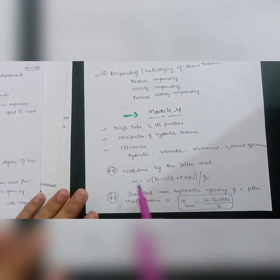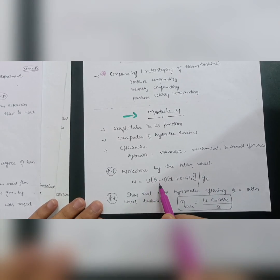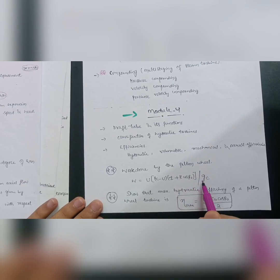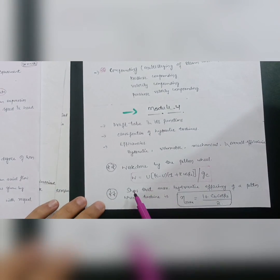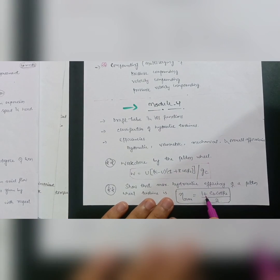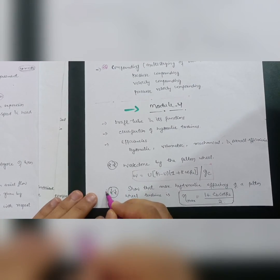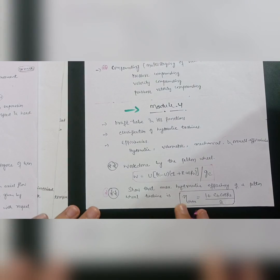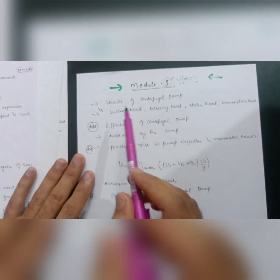Two high-probability questions in Module 4 are: first, work done by the Pelton wheel — the equation is W = U(V1 − U)(1 + k·cosβ2)/gc. Second, show that the maximum hydraulic efficiency of a Pelton wheel turbine is: η = (1 + cb·cosβ2)/2. This second question is the most important — I'm giving it triple stars — so focus on these two derivations in Module 4.